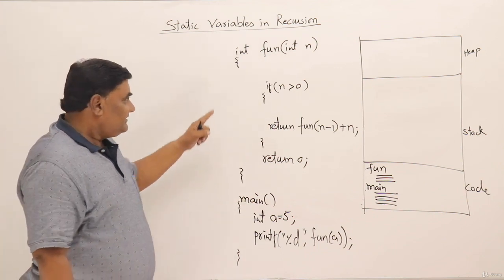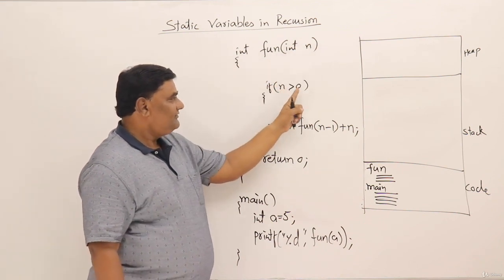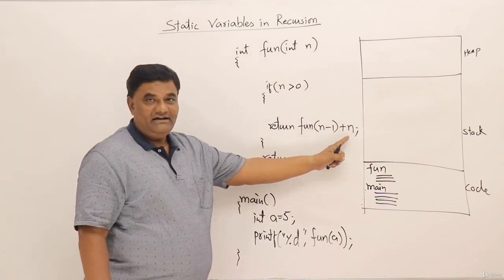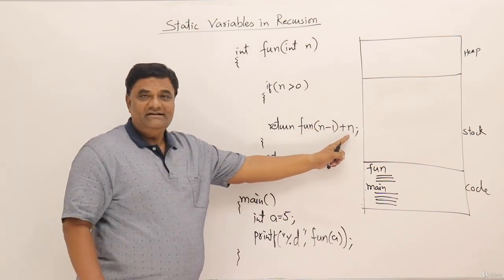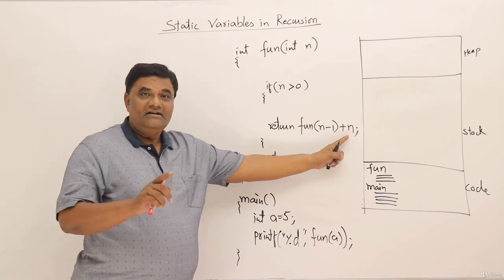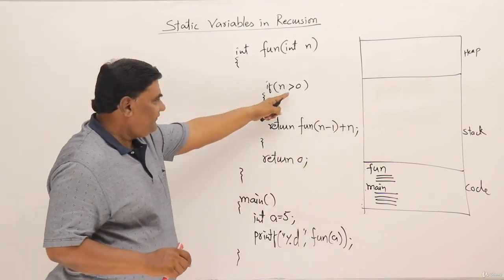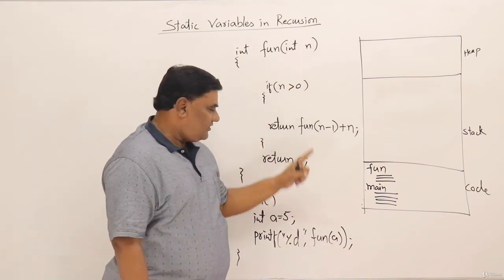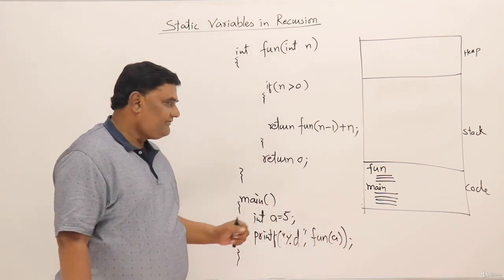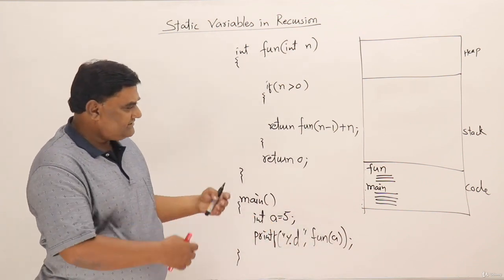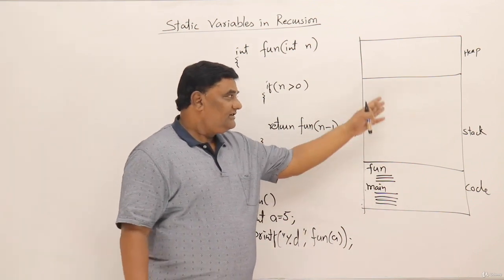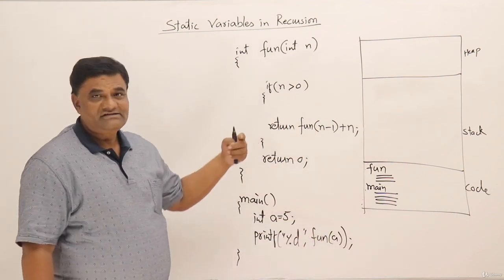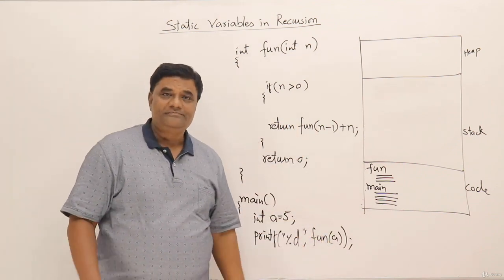There is a function 'fun' which takes parameter n. If n is greater than zero, it will call itself with a decreased value of n and also add n. This addition happens at returning time. If the value of n is zero, it returns zero. From the main function, this function is called by passing value 5. I have already taken a diagram showing the code section and how the stack is used.